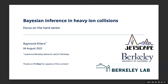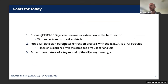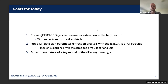Hello everyone. I'm going to try to build on these lectures from today, following up with some general content about Bayesian inference in heavy-ion collisions, but with a little more focus on the hard sector. Then we'll move to hands-on fairly quickly. There are two and a half things I'd like to cover: Bayesian parameter extraction from JETSCAPE in the hard sector, giving a different perspective than what you saw in the soft sector, and introducing the JETSCAPE Stat package — software that helps you run Bayesian analyses in a more organized manner.